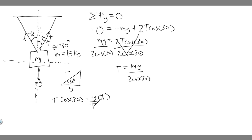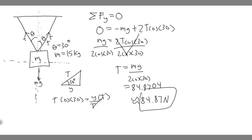Now plug in the values: mg is 9.8 times 15, divided by 2 times cosine of 30. When you calculate that, you get approximately 84.87 Newtons. This is in Newtons because it's a force. And this is the tension in each of the strings — both strings have the same tension, so T equals 84.87 N is your answer for each string.